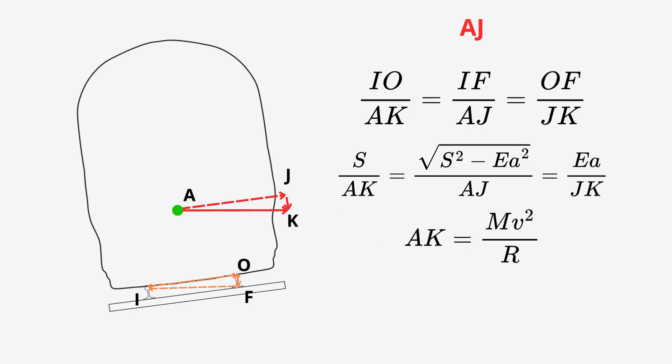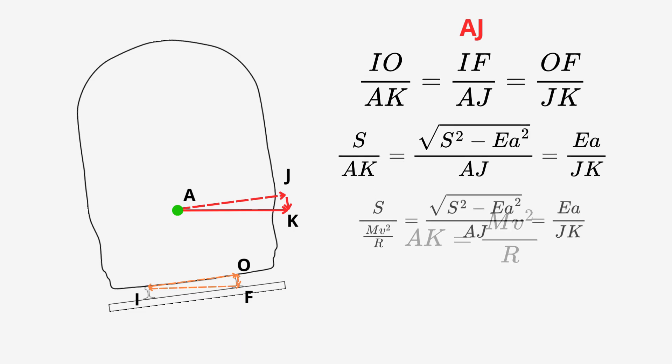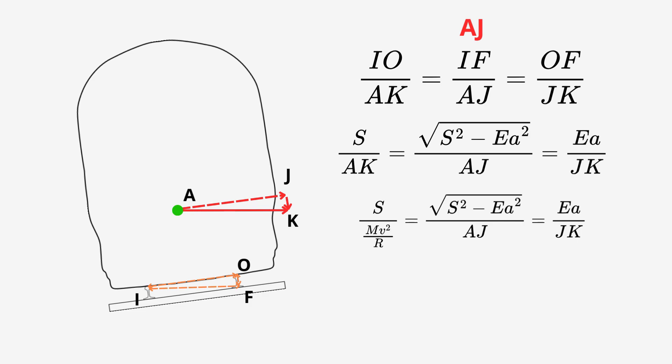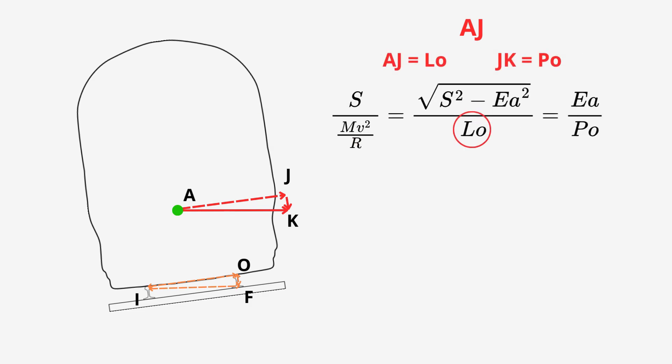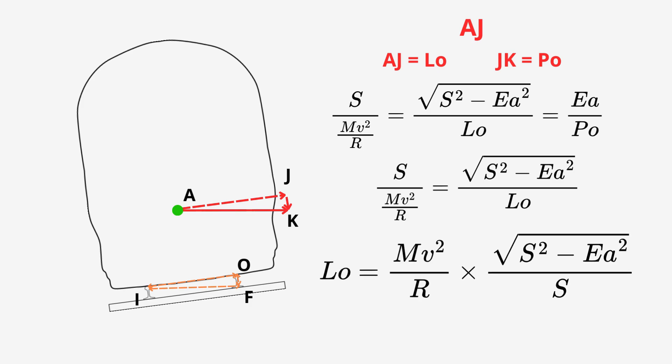Then AK is our centrifugal force, which if you remember back to earlier in the video, is found from MV squared over R. So, that leaves us with AJ and JK. Again, let's label them up. Let's have LO for the lateral outward and PO for perpendicular outward. Lovely. Again, we're going to focus on the lateral force. So, take the S over MV squared over R equals the square root of S squared minus EA squared all over LO and make LO the subject.